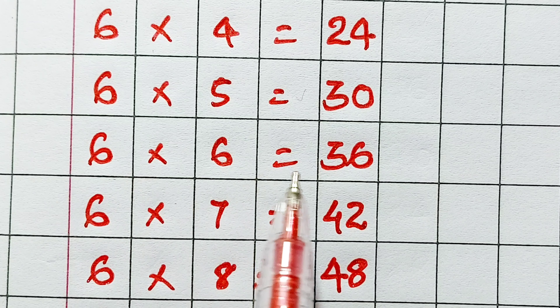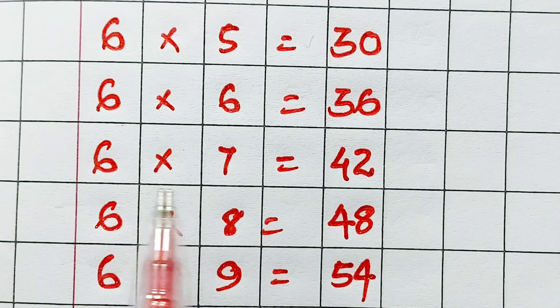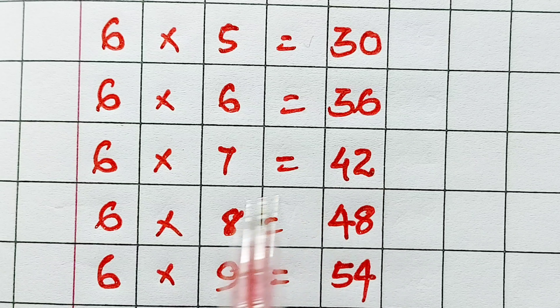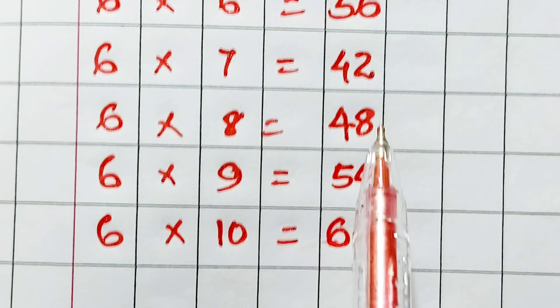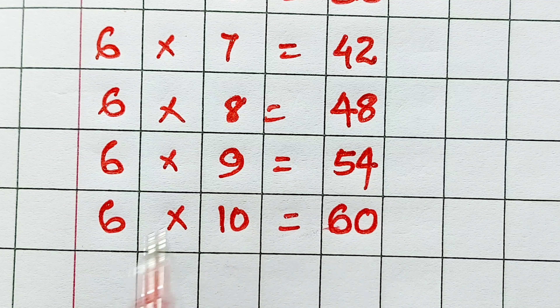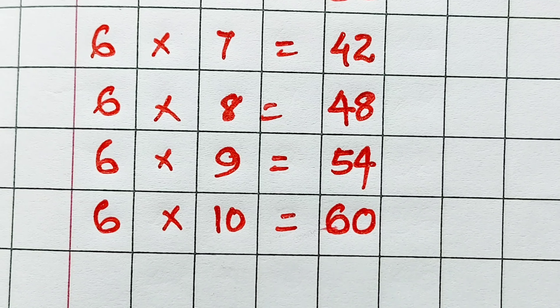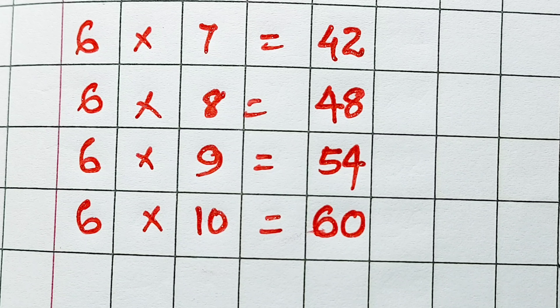Six six's are thirty-six. Six seven's are forty-two. Six eight's are forty-eight. Six nine's are fifty-four. Six ten's are sixty. Thank you.